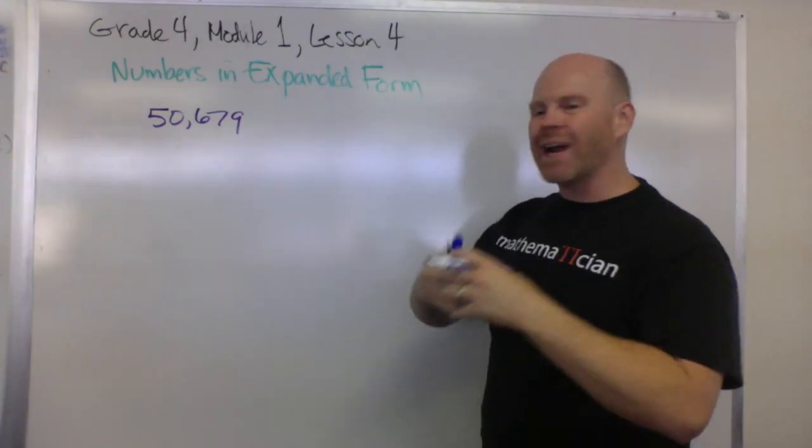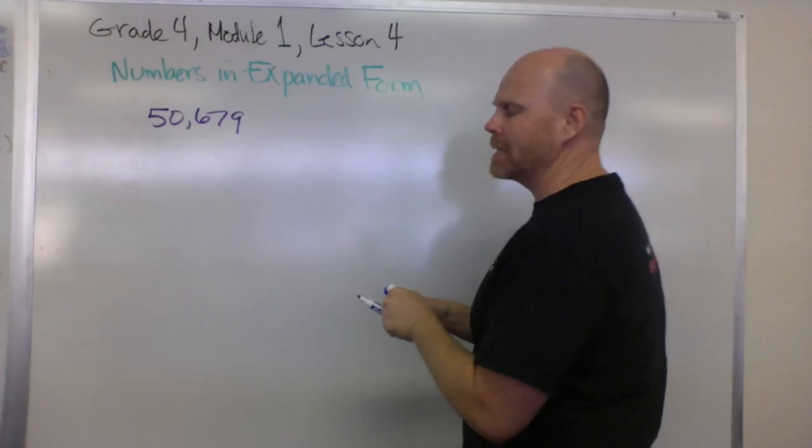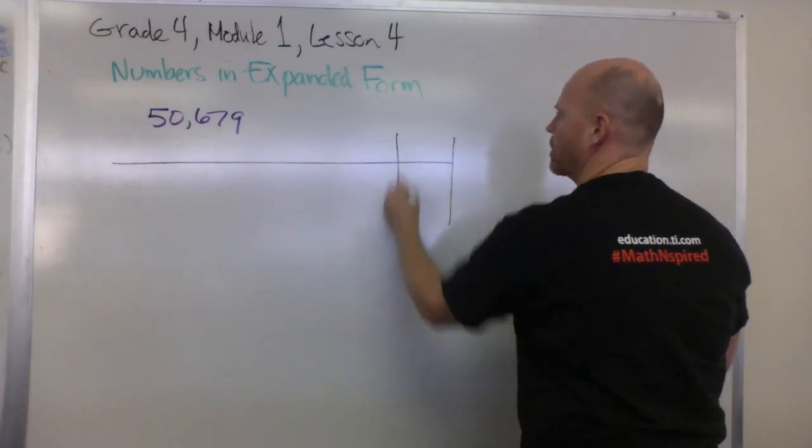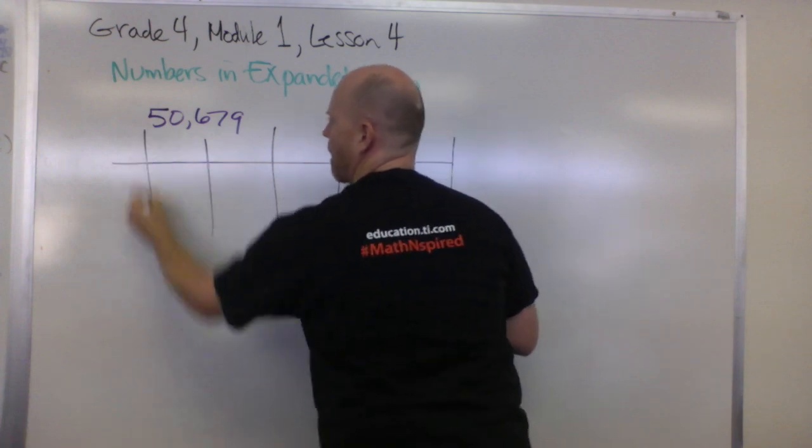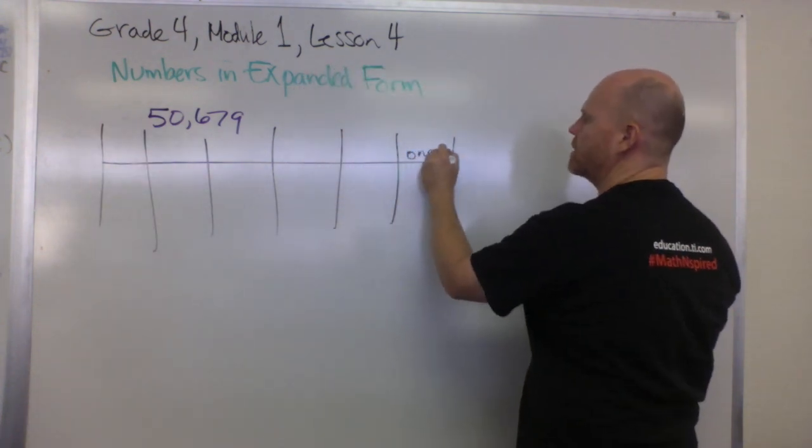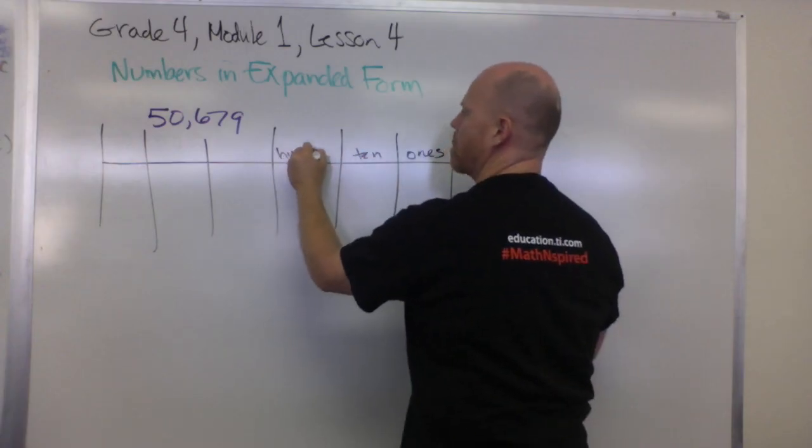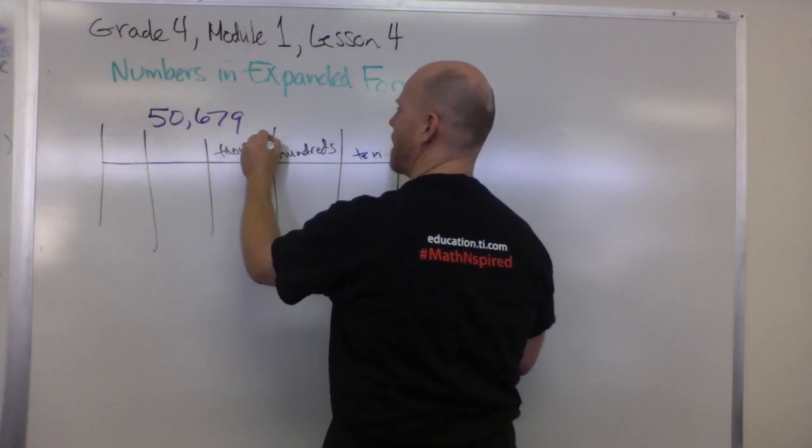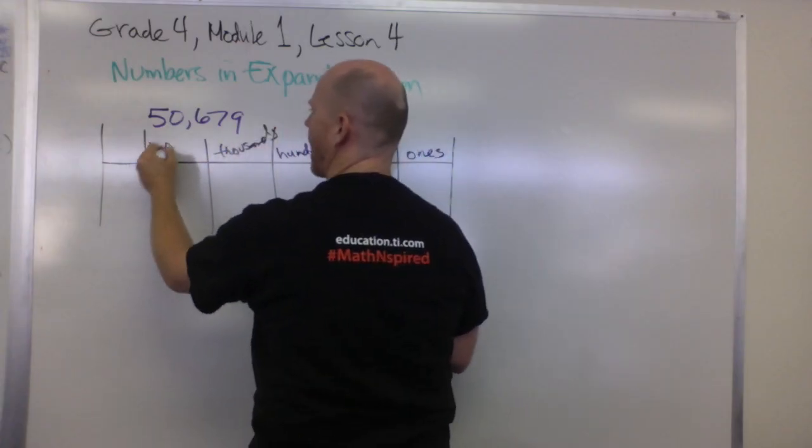And we want to write that in expanded form. So what that means is we're going to take a place value chart and we're going to fill that place value chart in. So these are the ones, tens, hundreds, thousands, ten thousands.